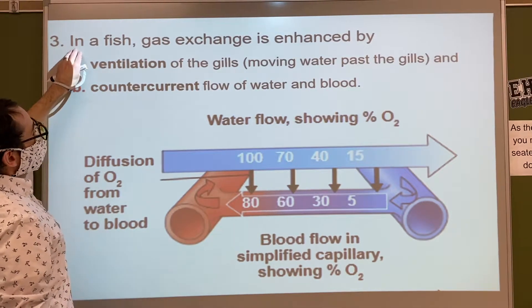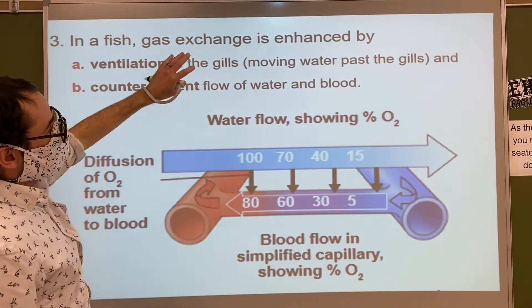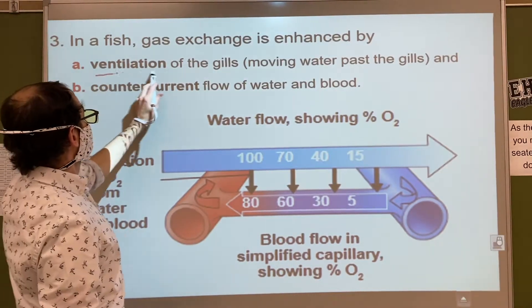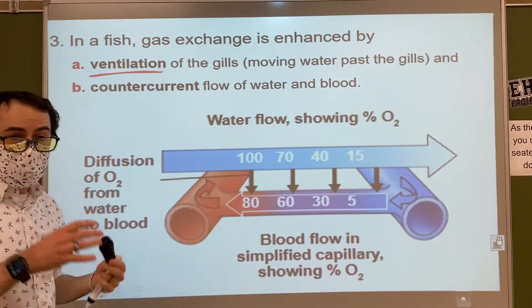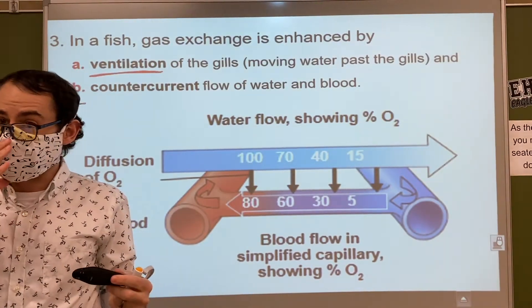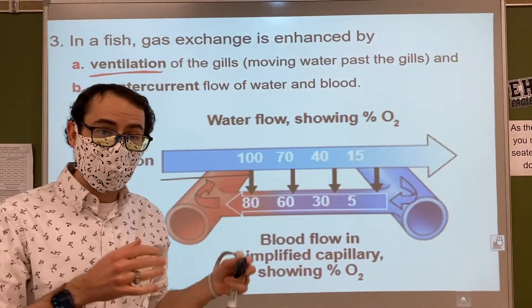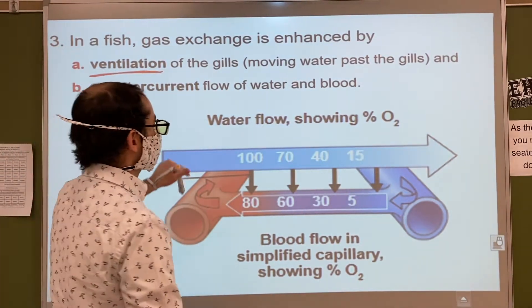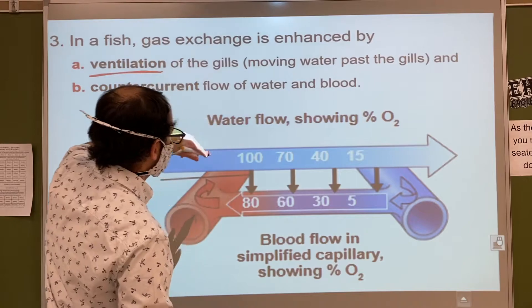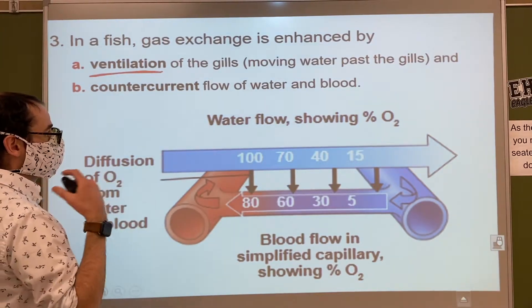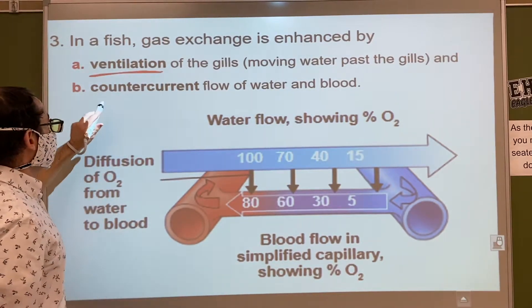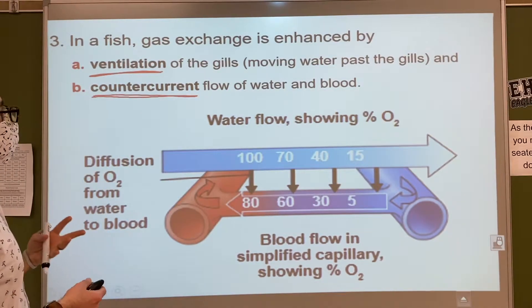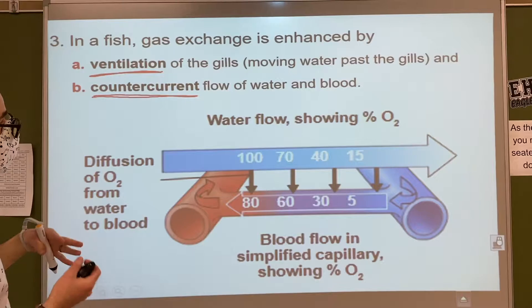In a fish, gas exchange is enhanced by two things. First, ventilation — that means moving water past the gills. You either want the fish to be moving, or you want gill covers that flap, getting more water in there to provide more oxygen. Second, there's the counter-current flow of water and blood.